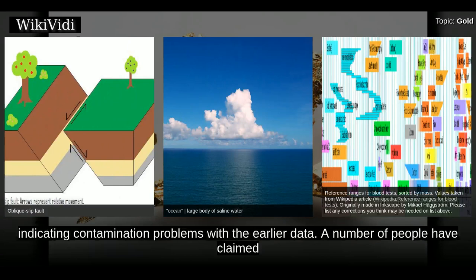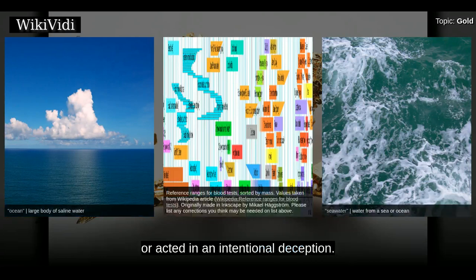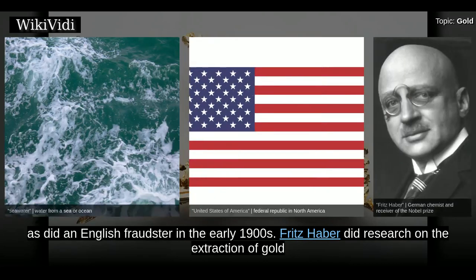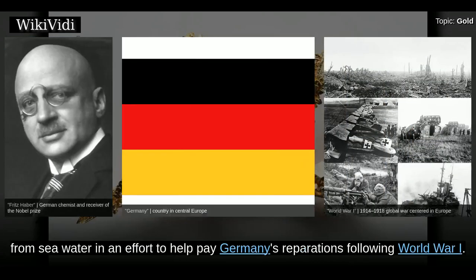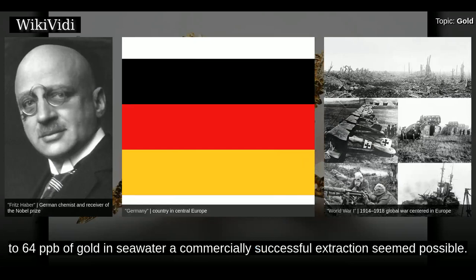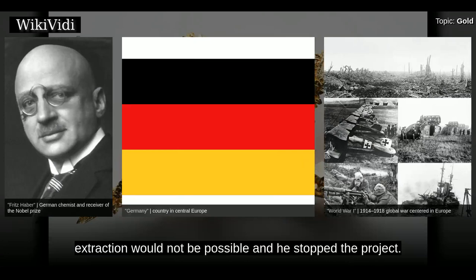A number of people have claimed to be able to economically recover gold from seawater, but they were either mistaken or acted in intentional deception. Prescott Jernegan ran a gold-from-seawater swindle in the United States in the 1890s, as did an English fraudster in the early 1900s. Fritz Haber did research on the extraction of gold from seawater in an effort to help aid Germany's reparations following World War I. Based on published values of 2 to 64 ppb of gold in seawater, a commercially successful extraction seemed possible. After analysis of 4,000 water samples yielding an average of 0.004 ppb, it became clear that extraction would not be possible, and he stopped the project.